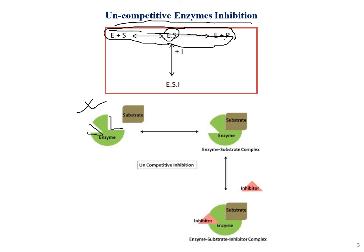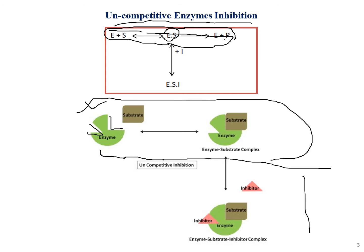Let's follow what happens step by step. The substrate first gets onto the active site of the enzyme to form an enzyme-substrate complex. Normally this would continue to form a product, but because this is enzyme inhibition, the inhibitor must play a role.